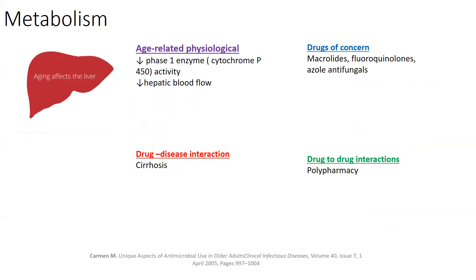Regarding metabolism — there is an age-related decrease in phase 1 enzyme activity, mainly cytochrome P450. The biggest problem can arise with polypharmacy, where drugs compete for cytochrome P450 and hepatic enzymes. This can result in an increased half-life of hepatically metabolized antibiotics, mainly macrolides as well as fluoroquinolones.